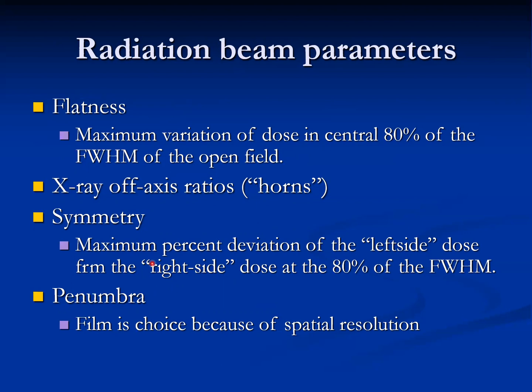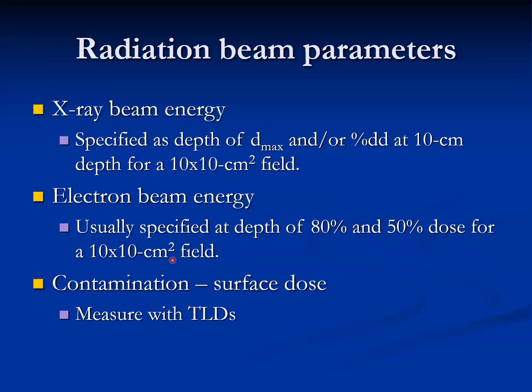You also have to calculate the penumbra. Film is a good choice because of its spatial resolution, but it can also be done with high-resolution chambers or a diode. For X-ray beam energies, specified at the depth of Dmax, depth dose is measured at tissue depth for a 10×10 cm field. Electron beam energy is usually specified at the depth of 80% and 50% of the dose for a 10×10 or 15×15 cm field size, depending on the chosen energy.